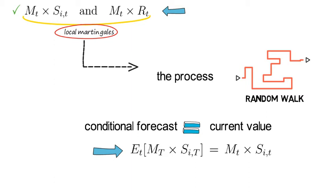And the local martingale property for M times R implies that the conditional expectation as of today of M times R in the future is simply today's product MT times RT.